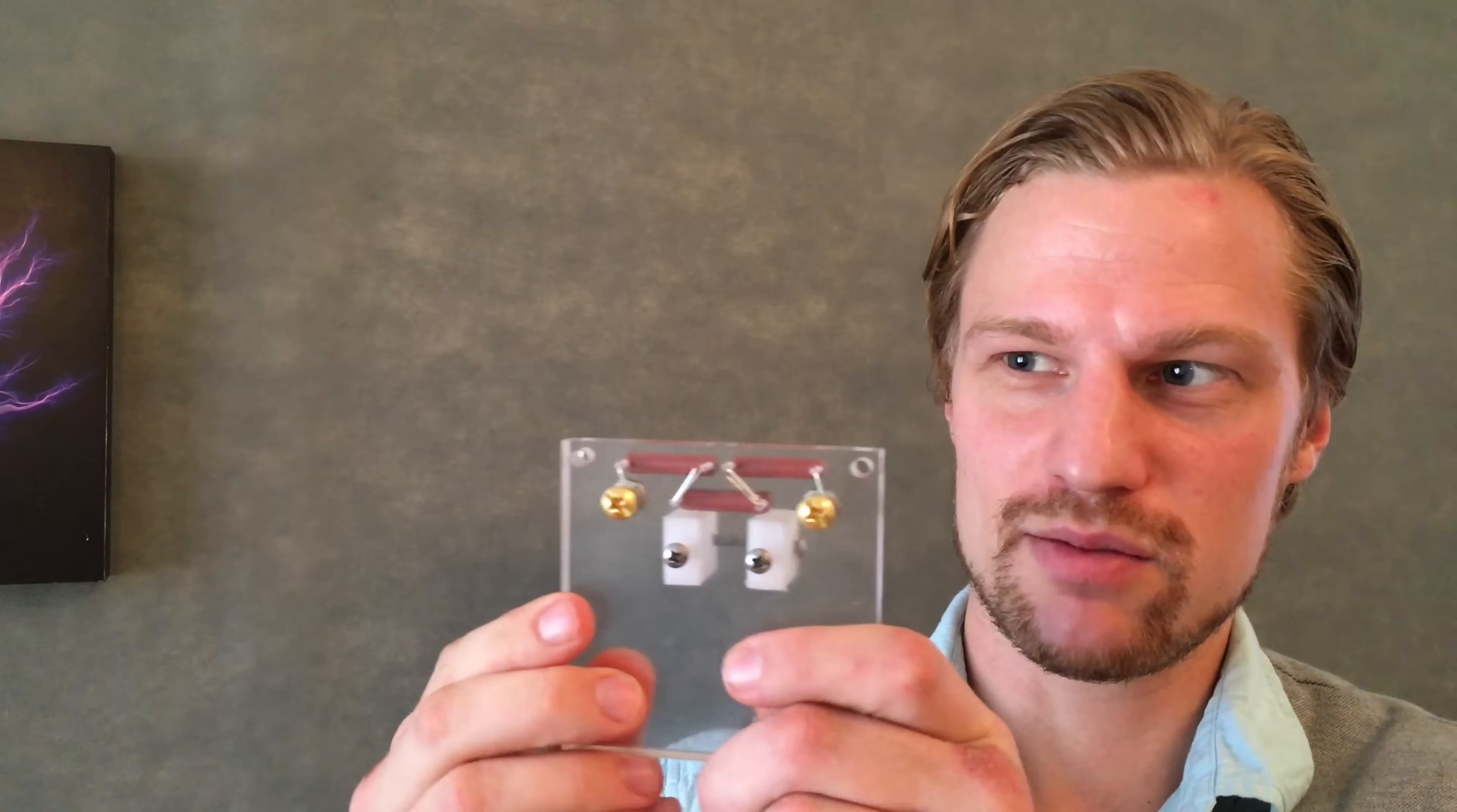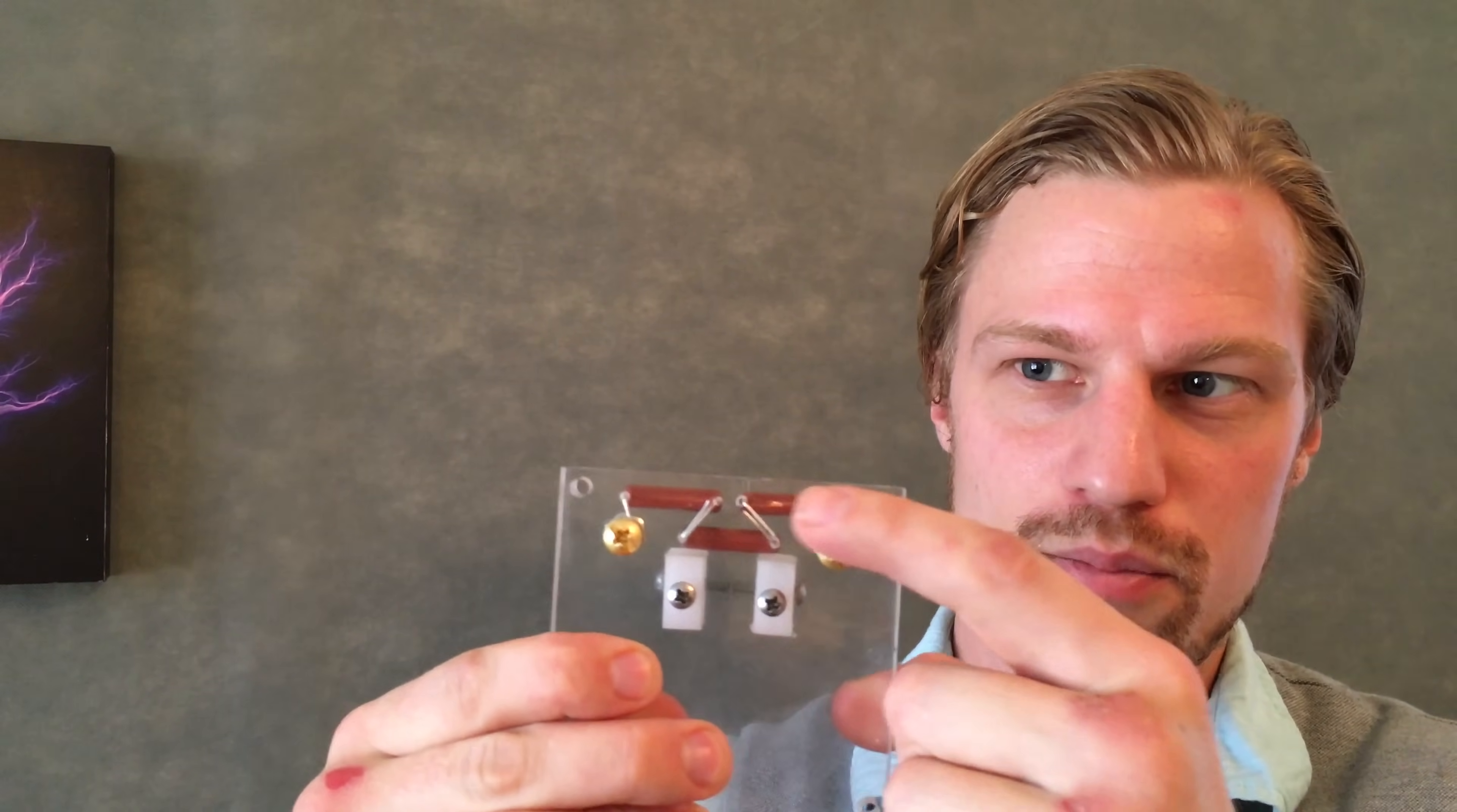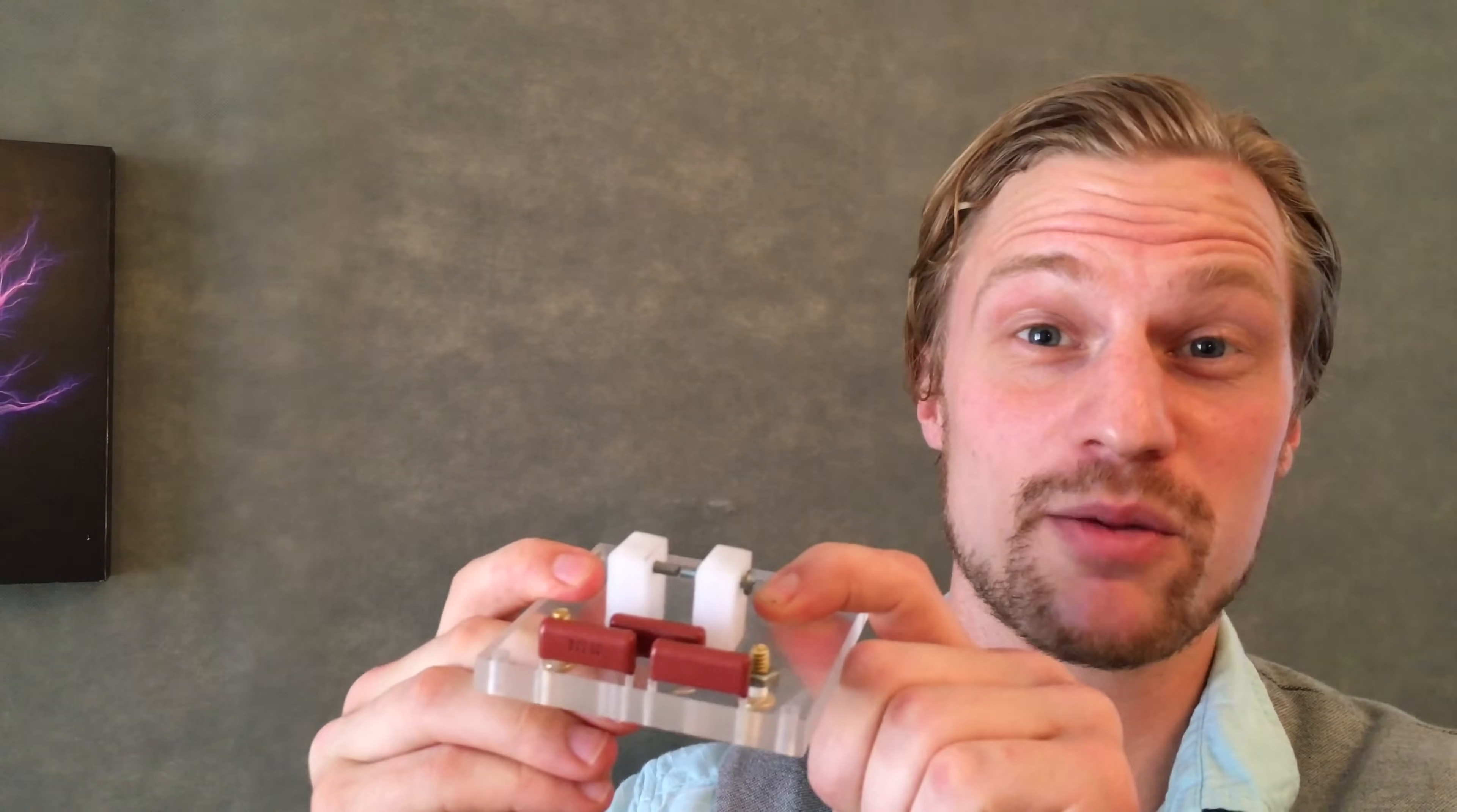Once you've drilled the holes and inserted the capacitors they should look like this. Now on the bottom side go ahead and make sure the end of one lead wrap it around this bolt and the end of another lead wrap it around this bolt. Bend the wires in a zigzag fashion like so, solder these two points and now you've got a capacitor bank.